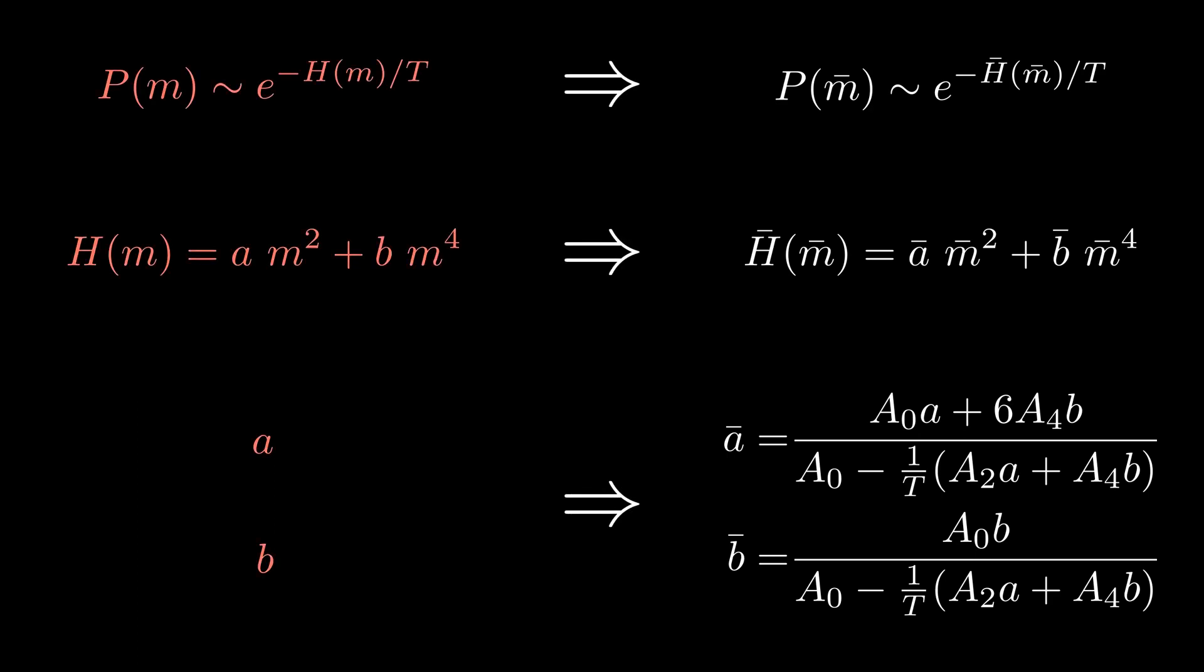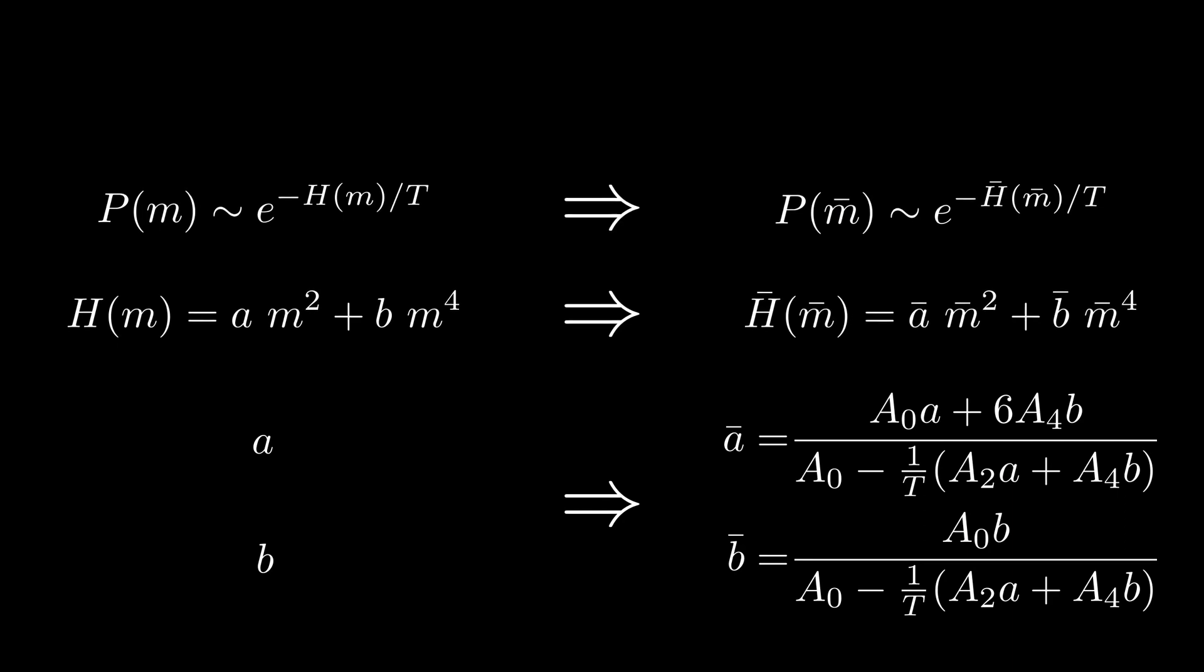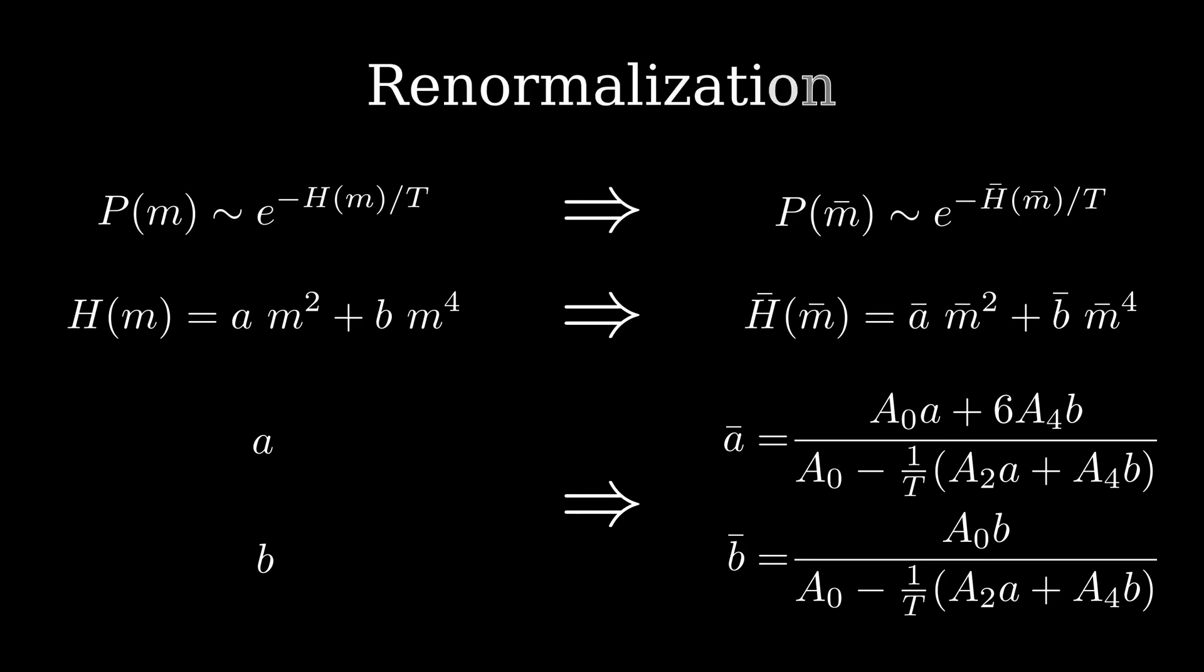Starting from our original description of our system, we calculated a new model, valid for a larger scale. This is what we mean by renormalization, and we call h bar the renormalized Hamiltonian, and a bar and b bar the renormalized coefficients.